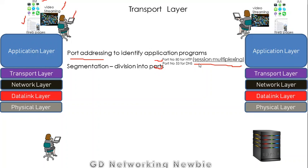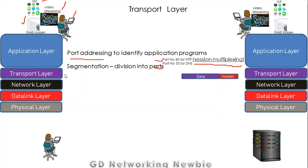The transport layer also provides segmentation. Segmentation means dividing data into parts. When the application layer hands over data to the transport layer, the transport layer breaks it into parts, adds a header on top, and we call this a segment. The header includes a sequence number, which ensures the message is transmitted and delivered in the correct sequence at the receiving end.